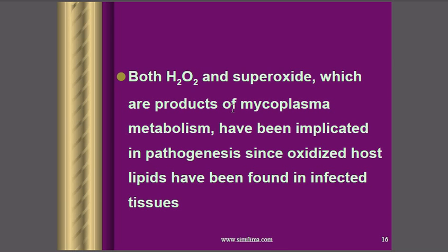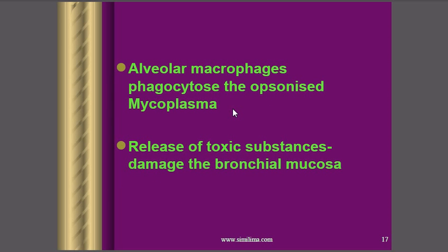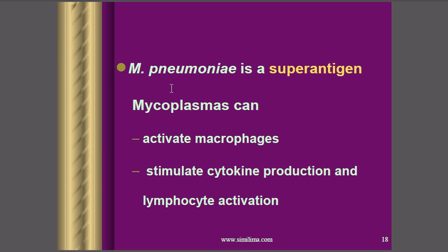Mycoplasma produces hydrogen peroxide and superoxide, both of which are harmful to normal cells. Using these toxic compounds, mycoplasma creates a toxic environment that allows it to infect our tissues. Additionally, Mycoplasma pneumoniae acts as a superantigen, activating macrophages and stimulating cytokine production in huge amounts, leading to massive lymphocyte activation. This over-expression of immune response is very devastating.